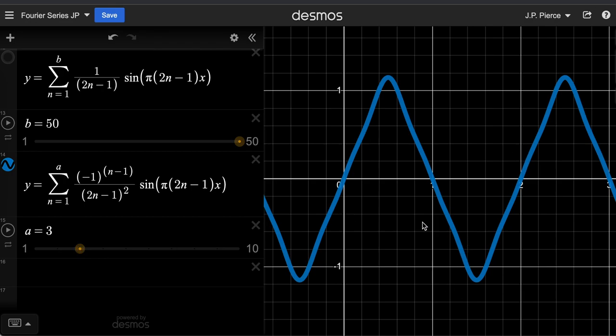And you already start getting quite a sharp sawtooth. So this set of sine waves will sum up to make a very sharp sawtooth function.